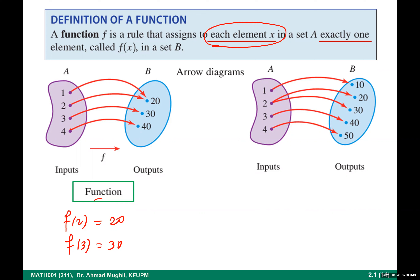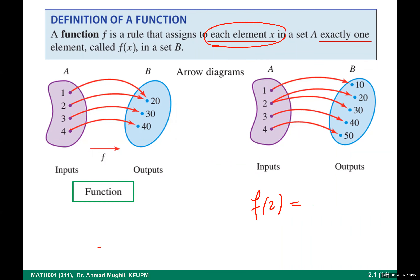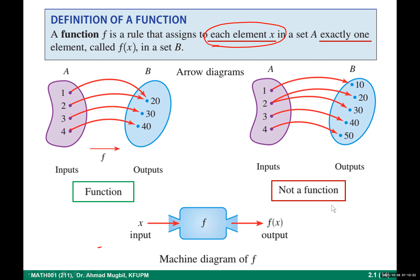A function guarantees that for each input you get exactly one output — you can expect the result, it is not arbitrary. Think of it like a machine: you give it an input, it does processing, and gives you one output. If you get two outputs for one input, it is not a function.